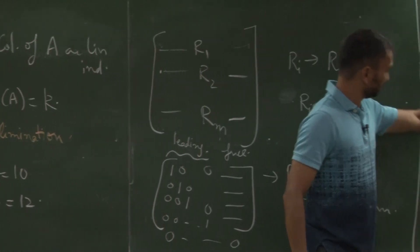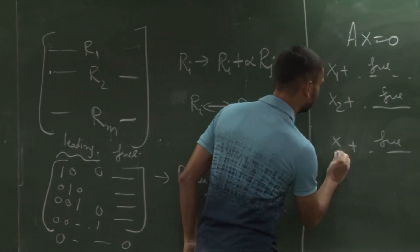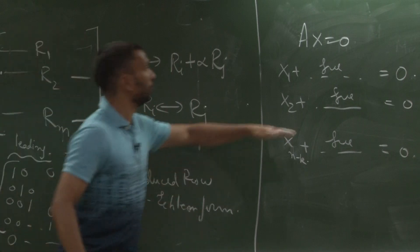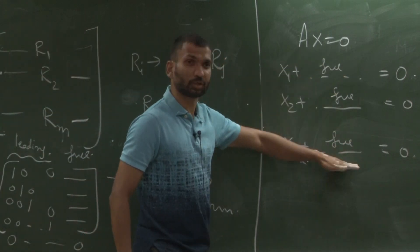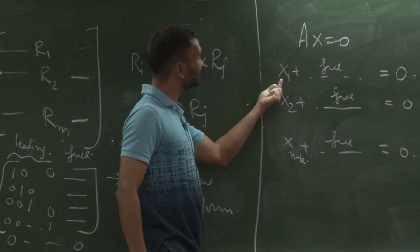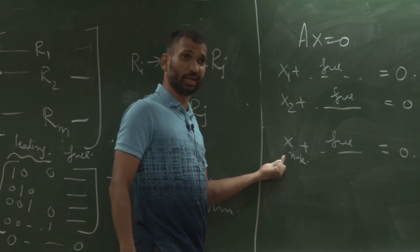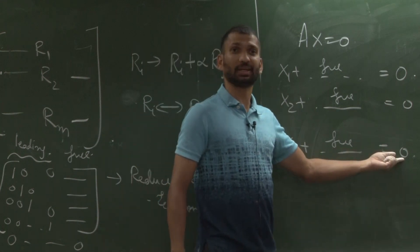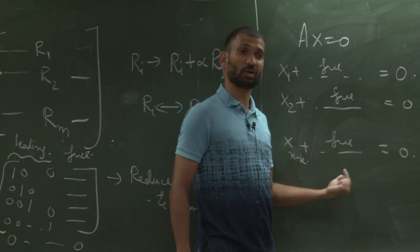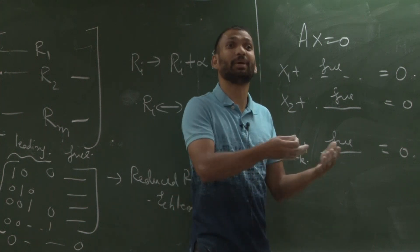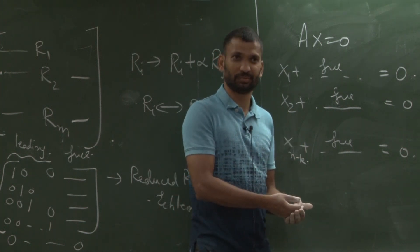So then you can set. So actually yes, whatever value you set for the free variables, this will give me some value of x1, x2 up to x n minus k. So that I get Ax equal to 0. So what is the number of free variables? This is the dimension of micro variables, right.